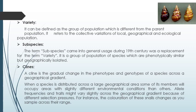First of all, what is variety? Variety can be defined as the group of population which is different from the parent population. It refers to collective variations of local, geographical, and ecological populations. In variety, organisms or populations will be different from their parent population because of their different localities — if organisms from two different locations interbreed, they will produce a different form, so the offspring will be different from the parent population.